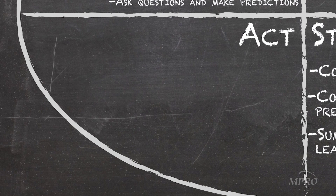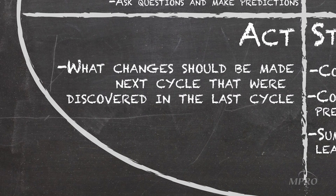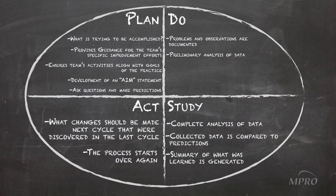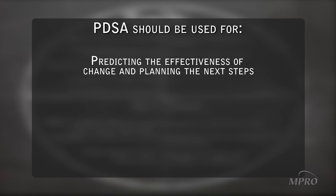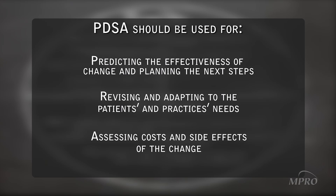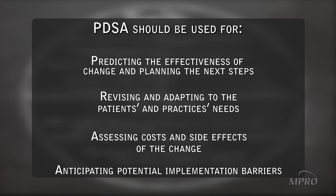The Act portion is where it gets decided what changes should be made the next cycle, based on what was discovered in the last cycle, and the process starts all over again. In a nutshell, the PDSA cycle should be used to predict the effectiveness of change and plan the next steps, revise and adapt changes to the patient's and practice's needs, assess costs and the side effects of the change, as well as to anticipate potential implementation barriers.